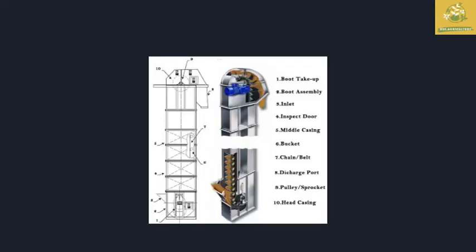You must remember that the bucket elevator has 10 important parts. The first is the boot take-up, second is the boot assembly, third is the inlet where material is poured in, fourth is the inspect door, and fifth is the middle casing. The inspect door prevents the bucket from being overloaded — if the bucket gets overloaded it cannot be lifted on the belt. The sixth is the bucket, seventh is the chain or belt, and the eighth is the discharge port where material is released due to centrifugal or gravitational force.